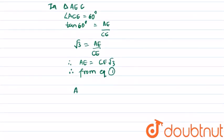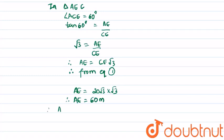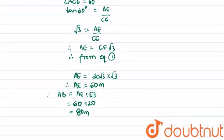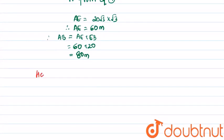AE equals 20√3 × √3, which equals 60. Therefore the total height of the tower is AE plus EB, that is 60 plus 20, which equals 80 meters. So from this we get that the height of the tower is 80 meters.